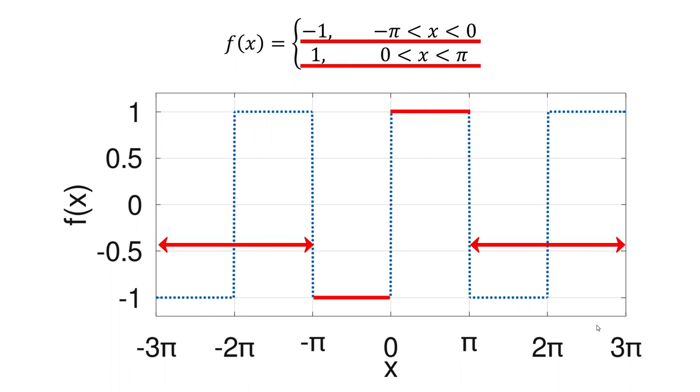It repeats every 2 pi. First of all, we plot fx using GNU Octave or MATLAB between minus 3 pi and 3 pi. As a first step, we will plot fx between minus pi and pi, and then we can extend it to minus 3 pi to 3 pi.